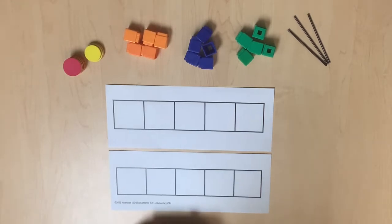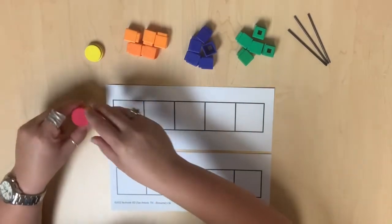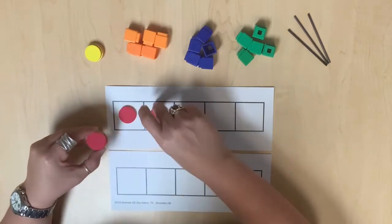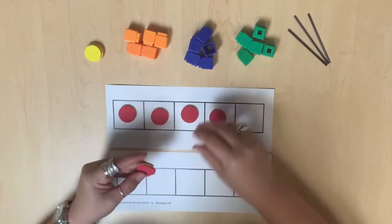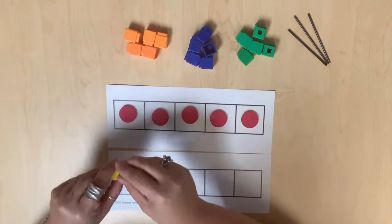When we compare sets of objects, students can use two 5-frames arranged one on top of another. Each 5-frame contains a set. Each set is then compared to the other set using a counting strategy.